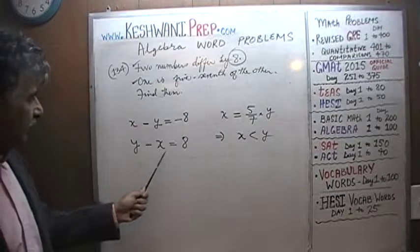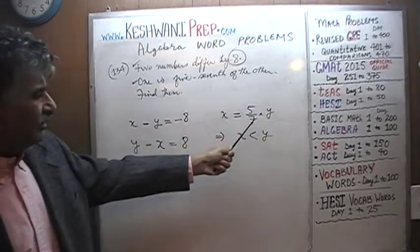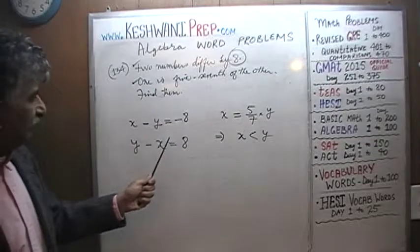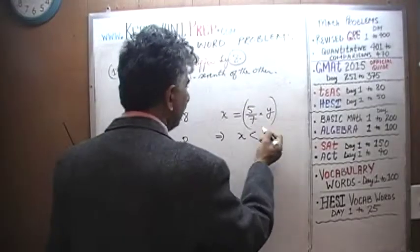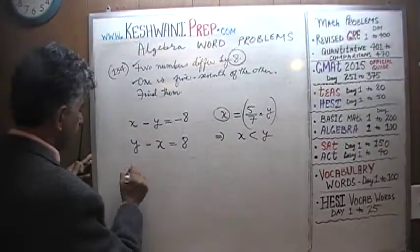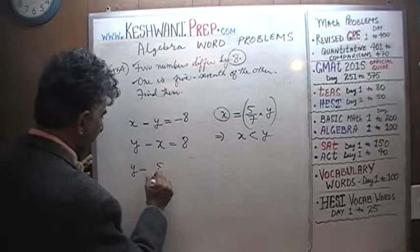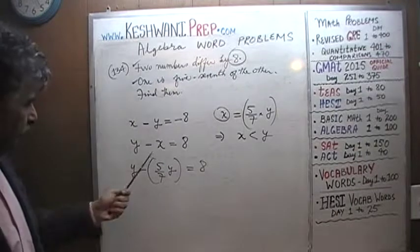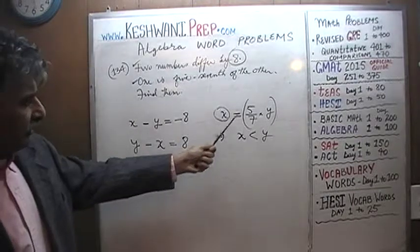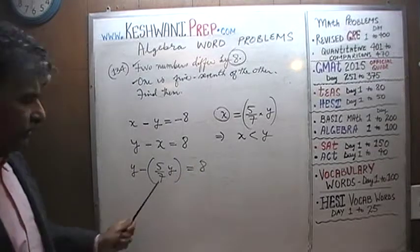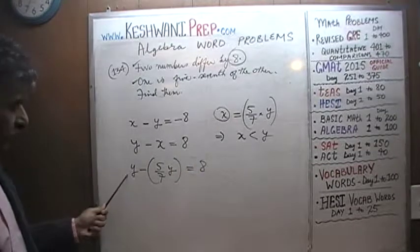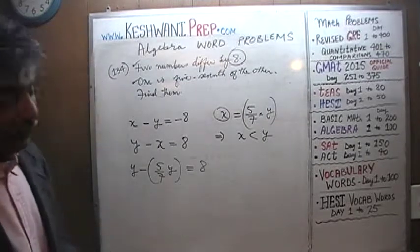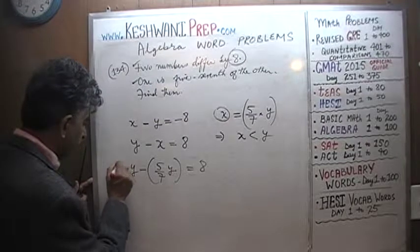So y minus x equals 8, and we know x is 5 sevenths of y. Let's substitute: y minus 5 sevenths of y equals 8. We now have a denominator of 7, so let's give every term the same denominator. Multiply y by 7 over 7 and multiply 8 by 7 over 7, so the entire equation has a denominator of 7.